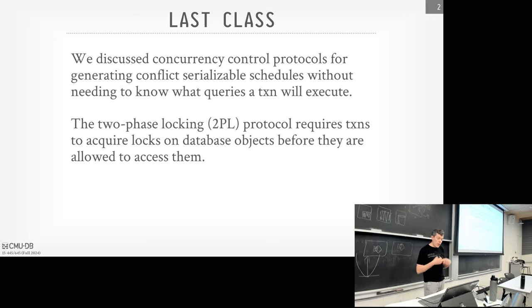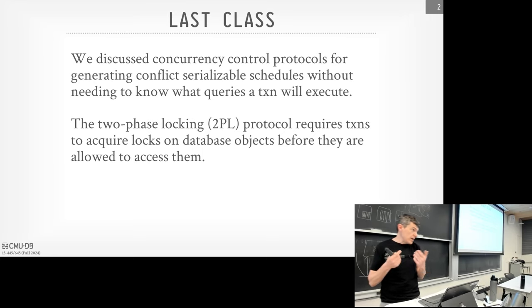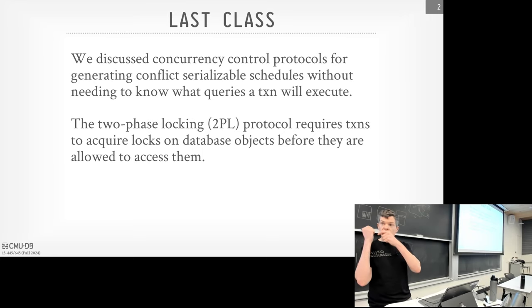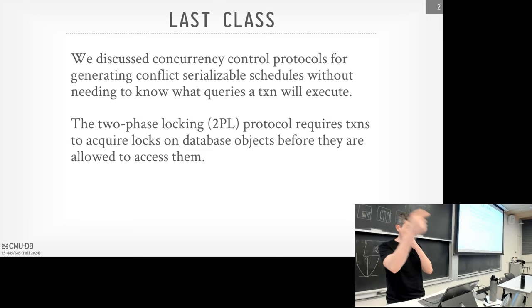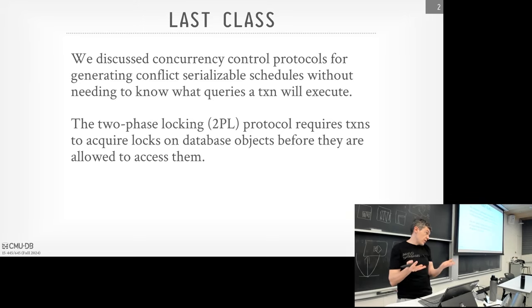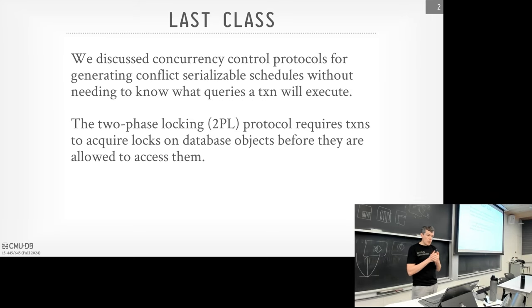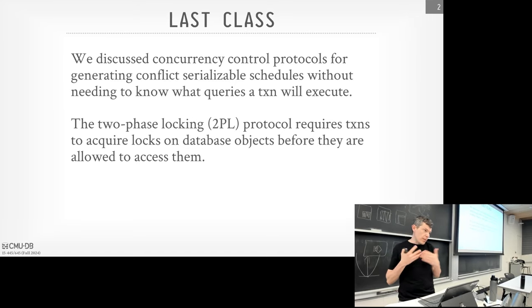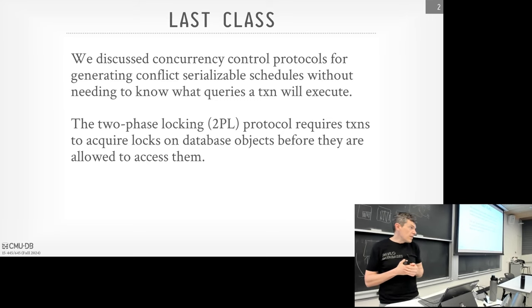The way to think about two-phase locking: it's what we'll call a pessimistic protocol, meaning the database system is going to assume that transactions are going to conflict. Therefore it requires you to get the locks for the things you want to touch before you're allowed to touch them. But it may be the case in some workloads and some environments that conflicts are actually rare.